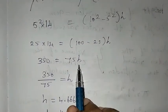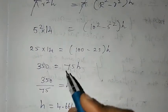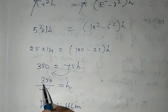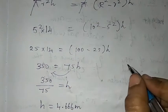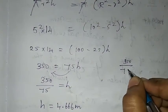Now the height equals 350 divided by 75. We will simplify by dividing both numerator and denominator. Cancel by 5: we get 70 divided by 15, then cancel again by 5 to get 14 divided by 3.